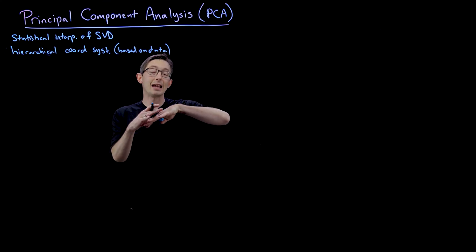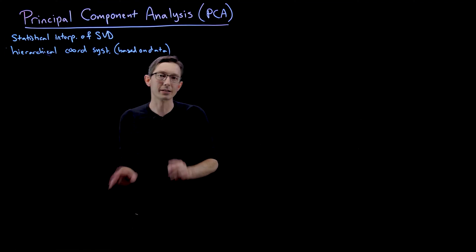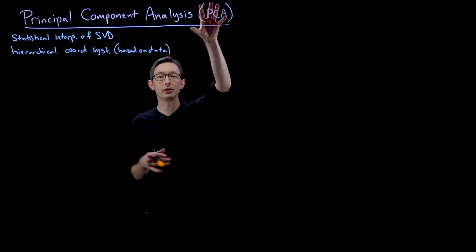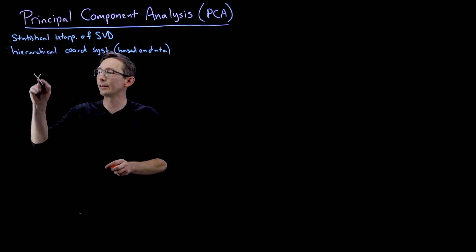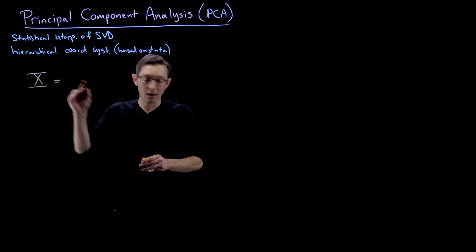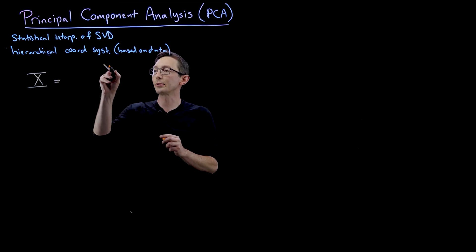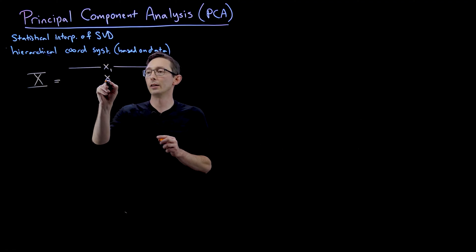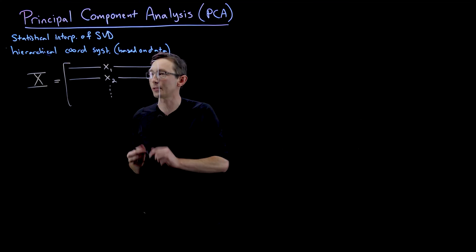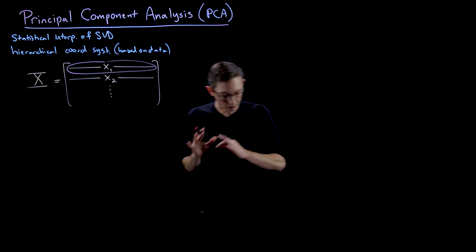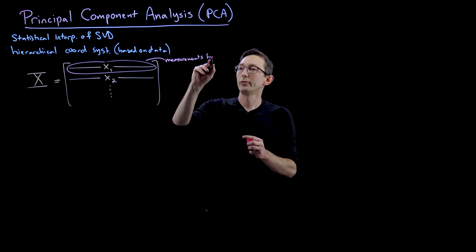The notation here is going to be a little different than what we're used to, because the PCA literature and the SVD literature have different conventions about what the matrix looks like. In the PCA literature we still have a data matrix X with measurements from independent experiments, but here we represent those independent experiments as big row vectors x1, x2, and so on. Each row vector essentially contains measurements from a single experiment.